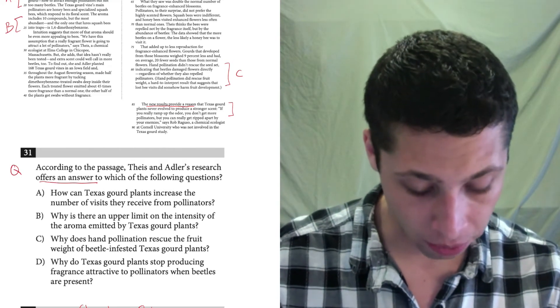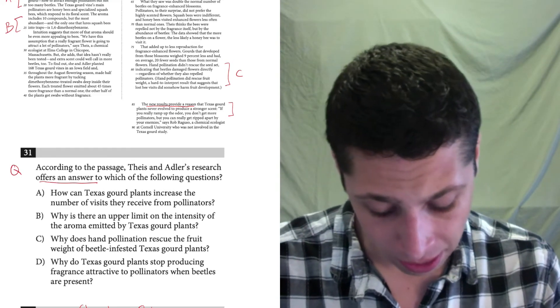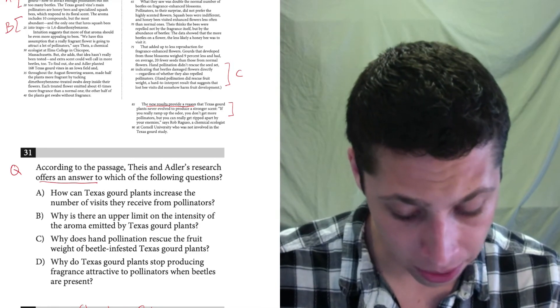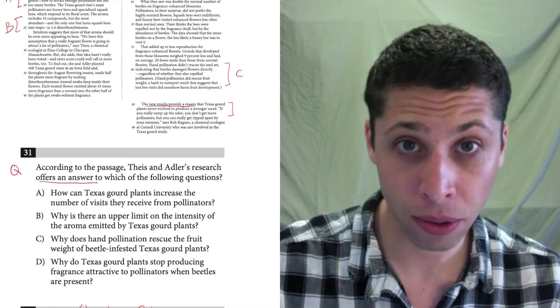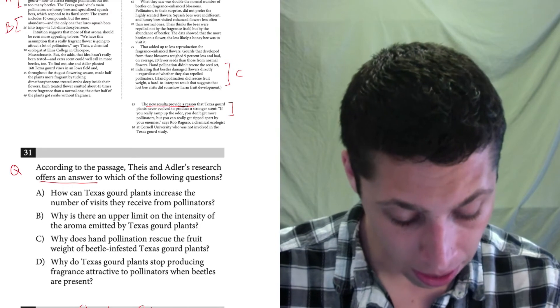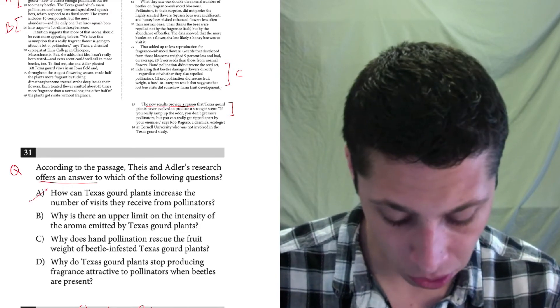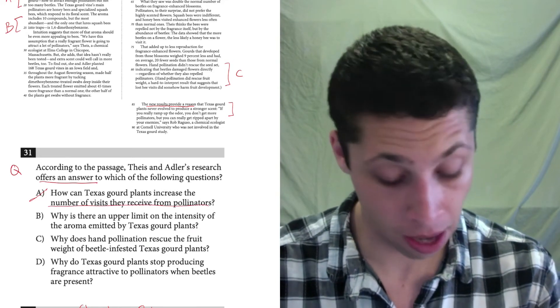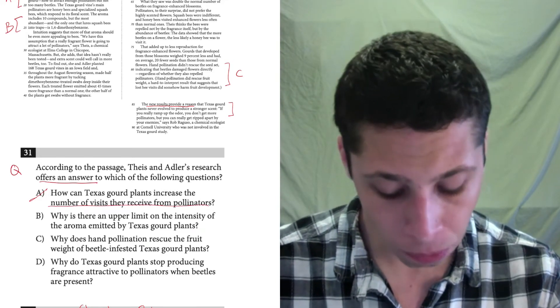But now we need to look at 31 and I need to make sure that I have a question that matches with that line reference. So choice A, how can Texas gourd plants increase the number of visits they receive from pollinators? That kind of matches with some of the line references we threw away, but it doesn't match with this one. So the number of pollinators not mentioned in line reference D.